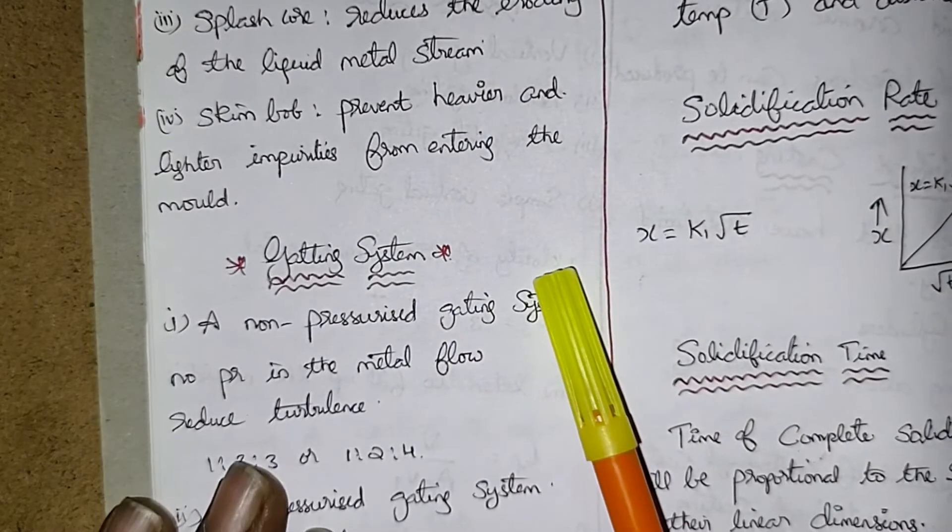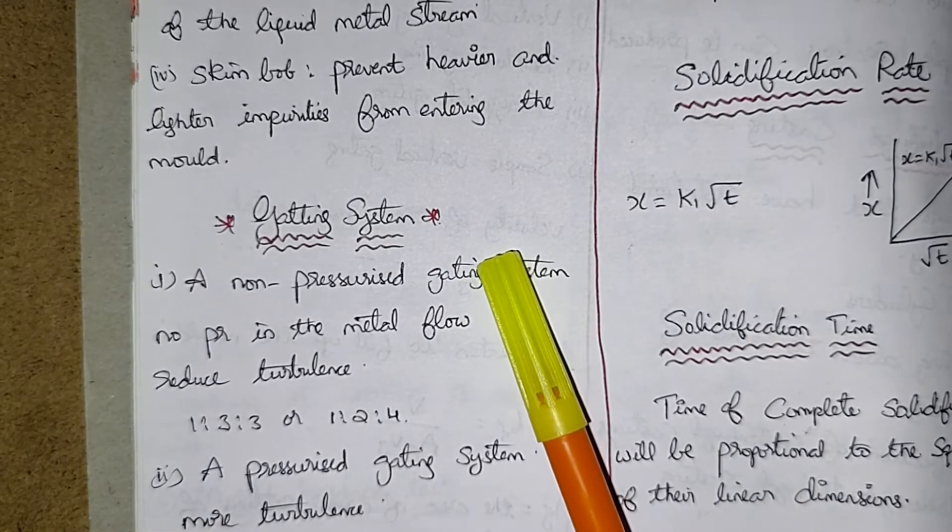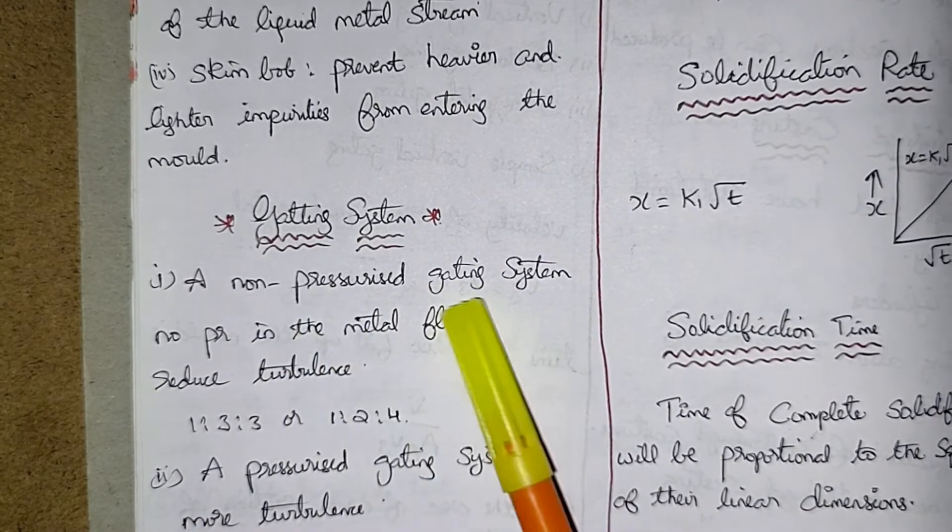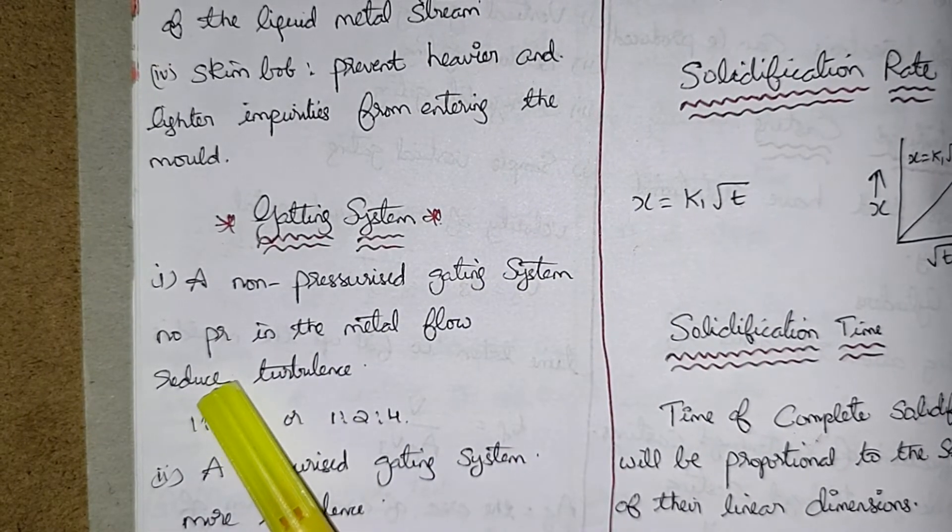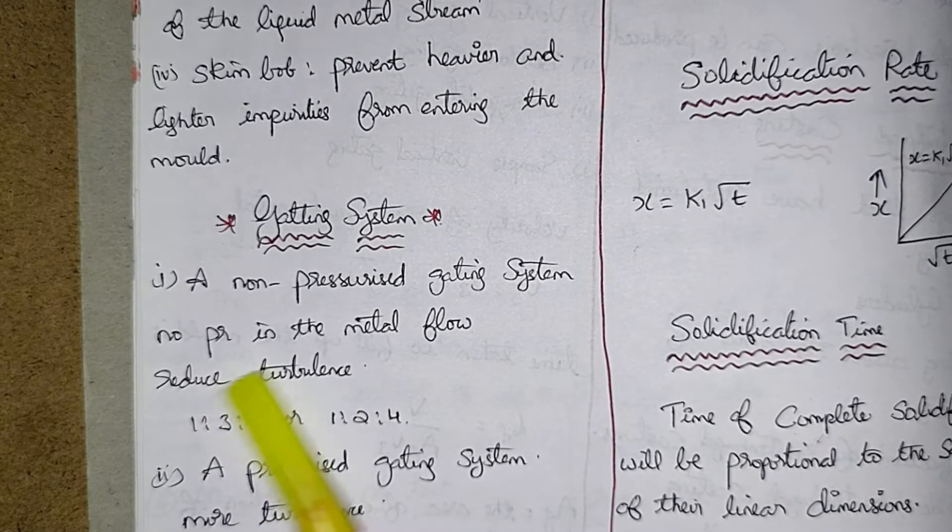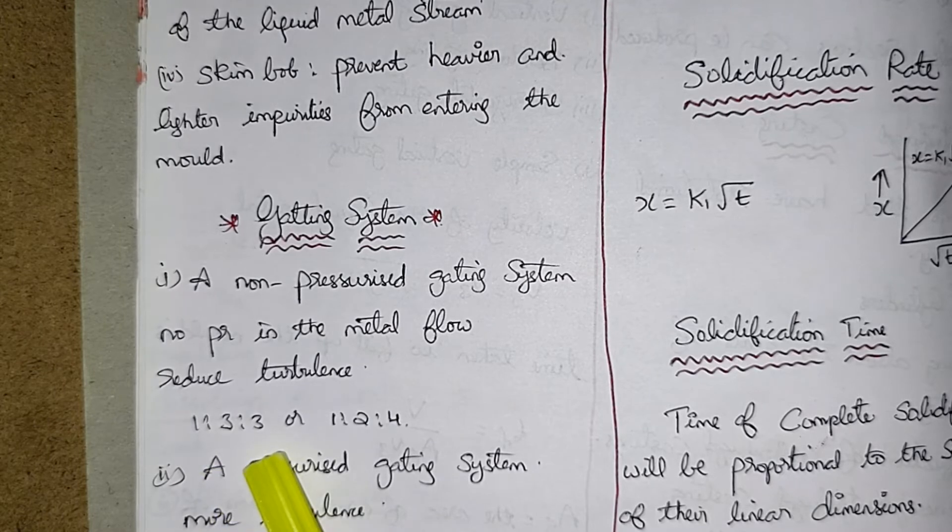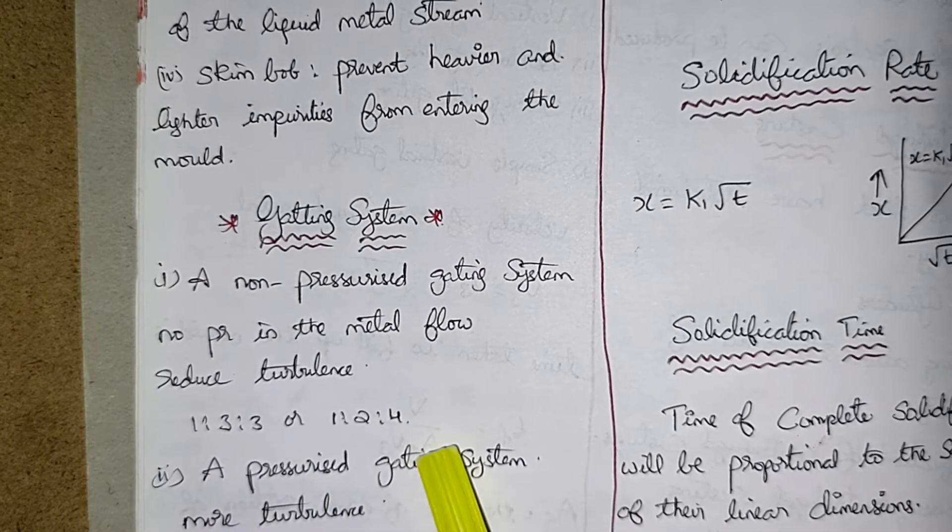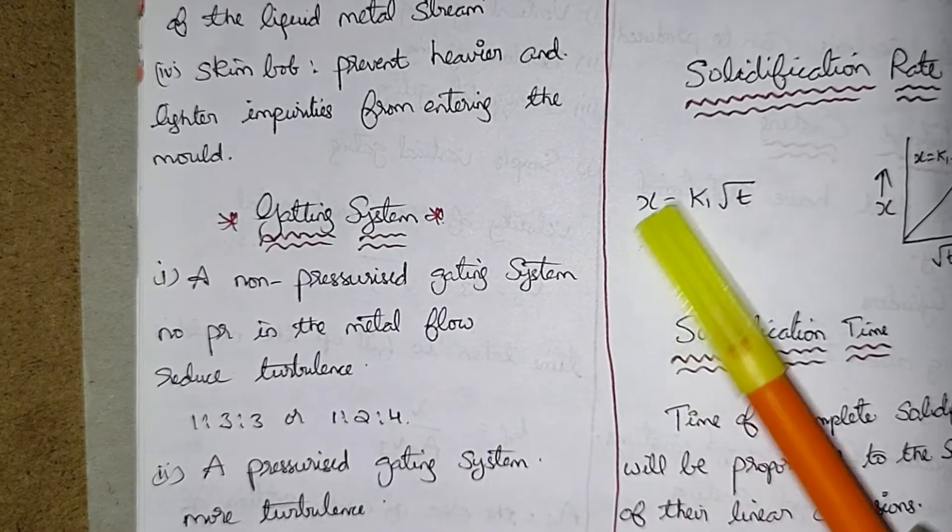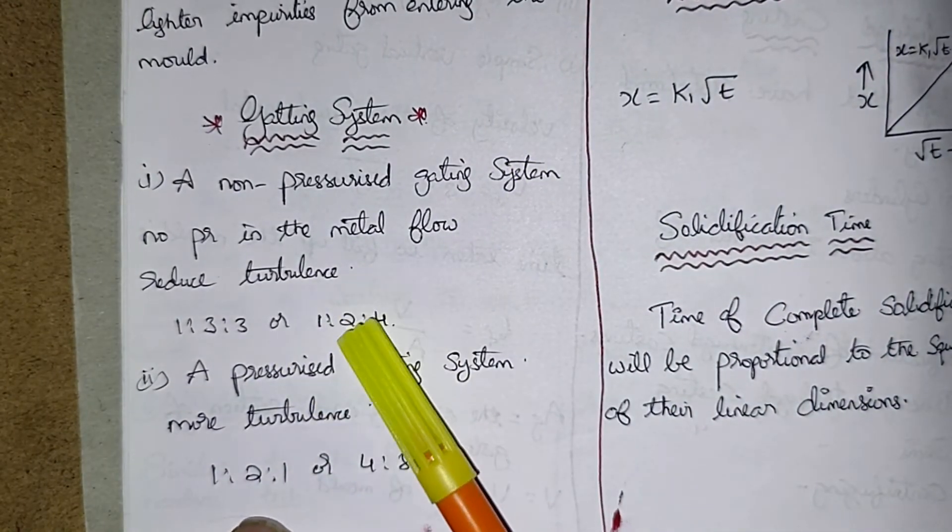Now gating system. Definitely you will get a question regarding this gating system. A non-pressurized gating system - number pressure in the metal flow reduce turbulence. So that is 1:3:3 or 1:2:4. This is the gating system which reduces the turbulence.